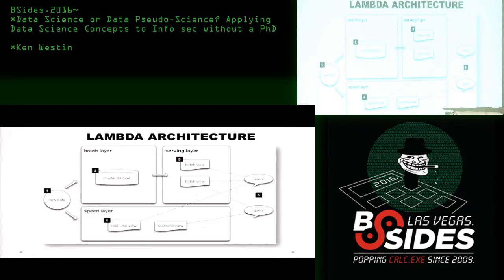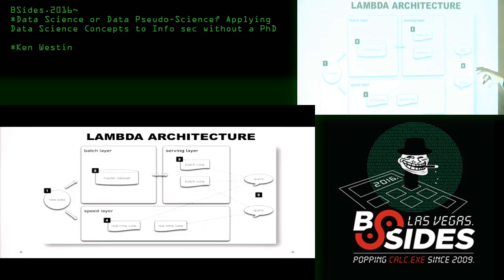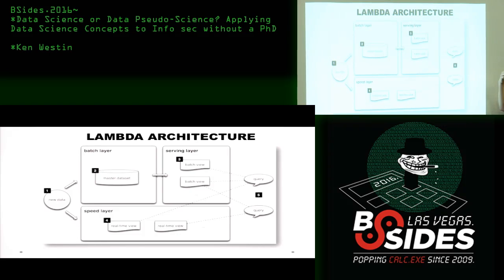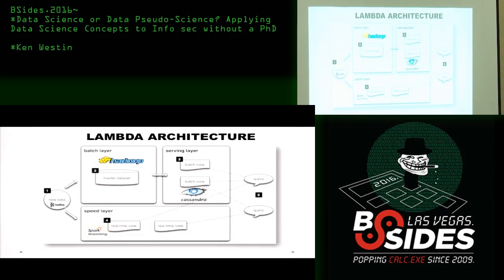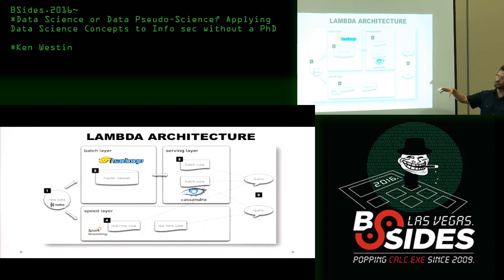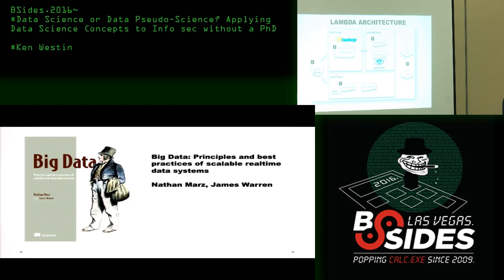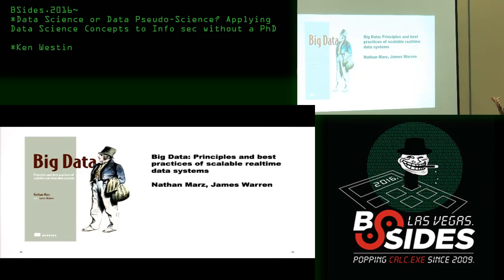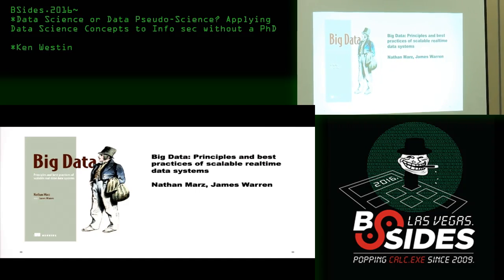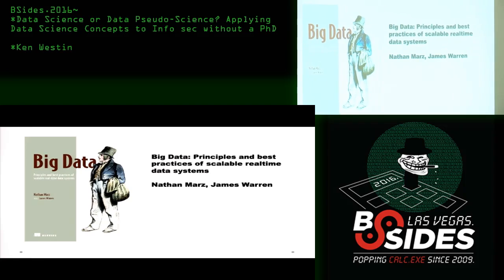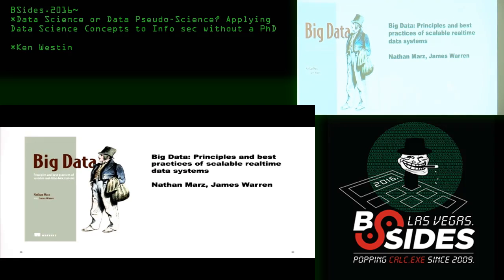We're able to run queries and see information flowing through. If you look at a lot of the tools for machine learning in security, this is the type of architecture they're actually built on top of. If you want to get more technical and build your own, the open source tools you'll hear about are Hadoop, Cassandra, Spark for the speed layer, and Kafka for gathering information. I highly recommend the book by Nathan Marz — at least the first three to four chapters so you understand how that architecture works.